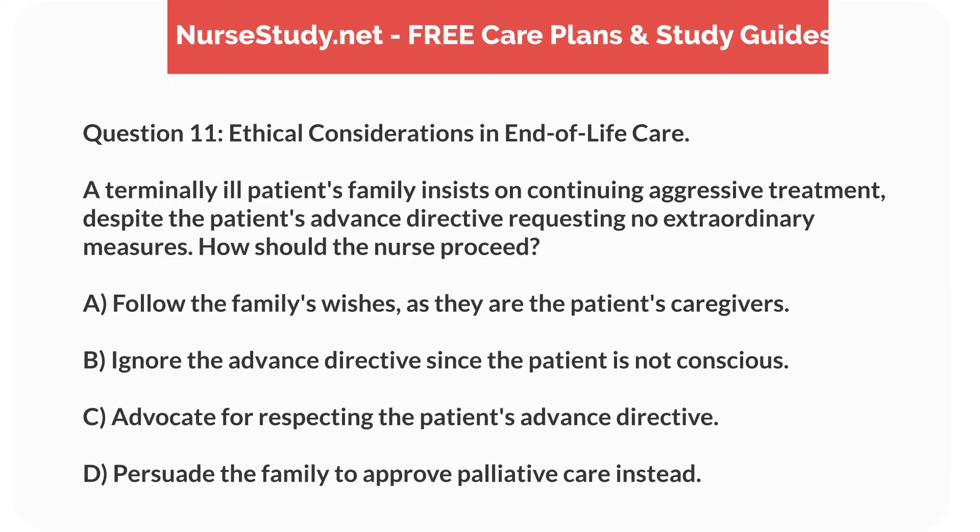Question 11. Ethical Considerations in End-of-Life Care. A terminally ill patient's family insists on continuing aggressive treatment, despite the patient's advance directive requesting no extraordinary measures. How should the nurse proceed? A. Follow the family's wishes, as they are the patient's caregivers. B. Ignore the advance directive, since the patient is not conscious. C. Advocate for respecting the patient's advance directive. D. Persuade the family to approve palliative care instead.